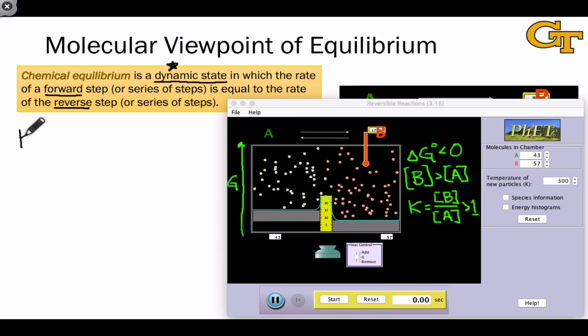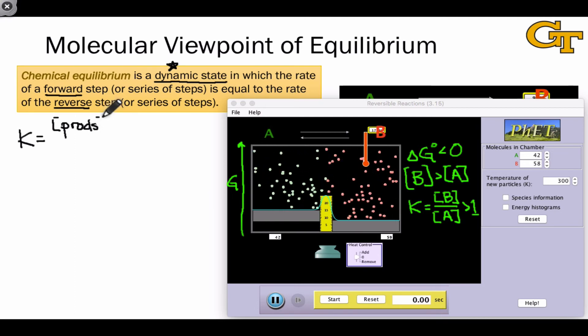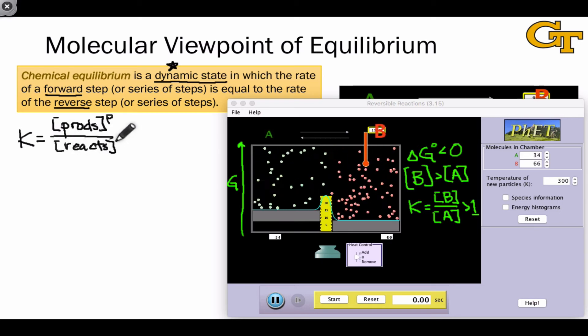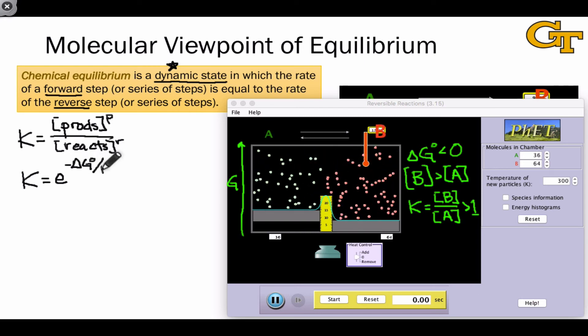There are two important equations built into this model. The first is the definition of the equilibrium constant, as the ratio of the concentrations of products raised to their stoichiometric coefficients divided by the concentrations of reactants raised to their stoichiometric coefficients all at equilibrium. And the second is the relationship between the equilibrium constant and delta G. And this is an exponential relationship. K depends exponentially on delta G. So small changes in delta G can lead to large changes in the value of K.